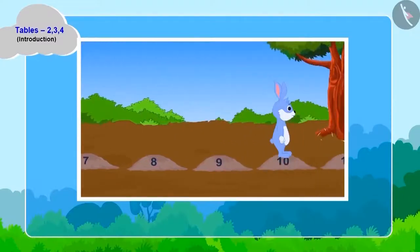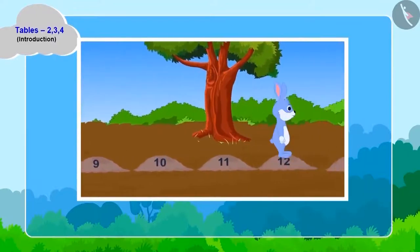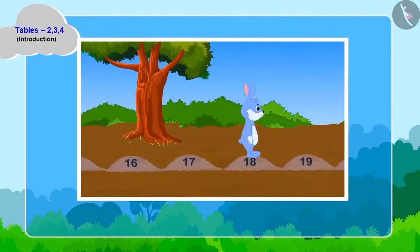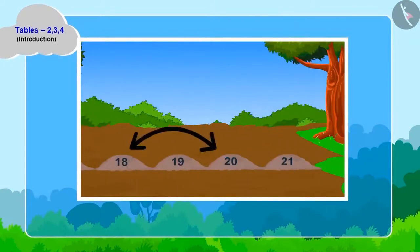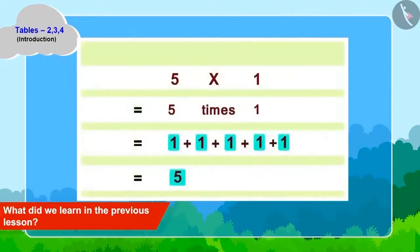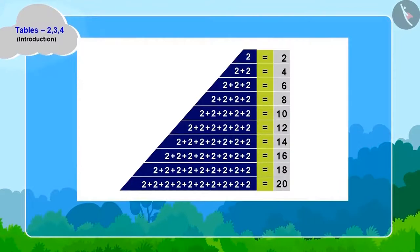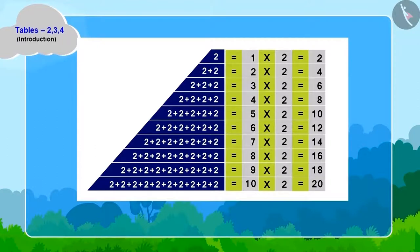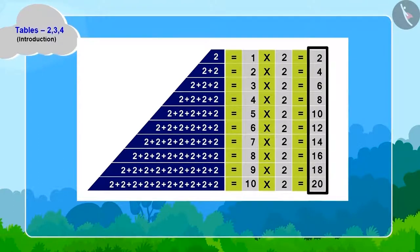Children, do you find something unique in Bunny's jumps? Two is being added with every jump. And what did we learn in the previous lesson? Repeated addition can also be written in the form of multiplication. Like this, the table of two has been made.